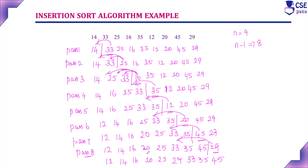At the end of the 8th pass, all elements occupy their right positions in the sorted list and the unsorted list is now empty. This is the logic of the insertion sort algorithm. The given array is divided into two halves initially, with the first element in the sorted list and remaining elements in the unsorted list. In every pass, one element from the unsorted list is compared with the sorted list and placed in the right position. At the end of every pass, one element is added to the sorted list and one is removed from the unsorted list. This continues for n minus 1 passes, after which all elements occupy the sorted list.